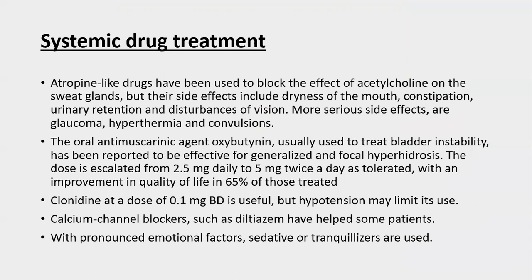Systemic drug treatments: atropine-like drugs block the effect of acetylcholine on sweat glands, but their side effects — dryness of mouth, constipation, urinary retention, disturbance of vision, glaucoma, hyperthermia, and convulsions — preclude their use. Oral anti-muscarinic drugs like oxybutynin are more effective and safer, used for bladder instability and effective in generalized and focal hyperhidrosis. Dose escalation from 2.5 mg daily to 5 mg twice daily is better tolerated and improves quality of life in 65% of patients. Clonidine 0.1 mg BD is useful but hypotension is a limiting factor. Calcium channel blockers like diltiazem help in some patients. If there is pronounced emotional sweating, tranquilizers may be used.